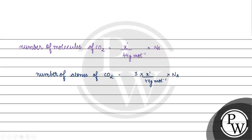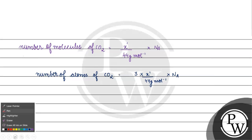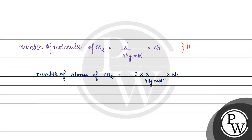1 molecule of carbon dioxide has 3 atoms. So the number of atoms in carbon dioxide, when the number of molecules is x dash by 44 into Avogadro's number, the number of atoms becomes 3 into x dash by 44 grams per mole into Avogadro's number.